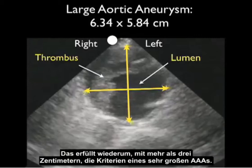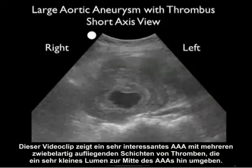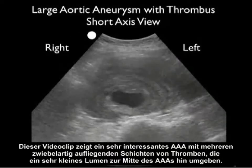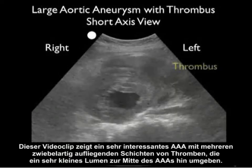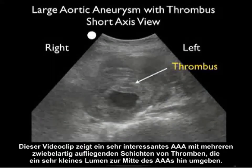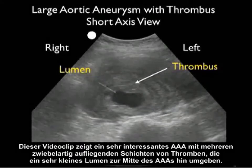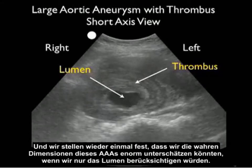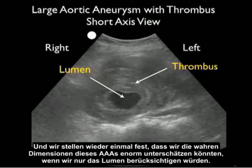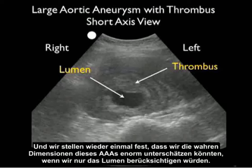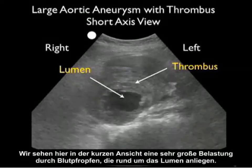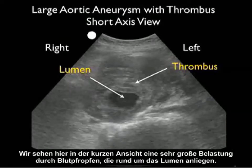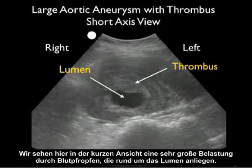This video clip shows a very interesting AAA with multiple onion skin layers of thrombus surrounding a very small lumen towards the middle of the AAA. Notice again that we could vastly underestimate the true dimensions if all we included was the lumen. We see a very large burden of clot surrounding the lumen circumferentially in a short axis orientation.